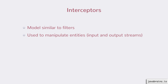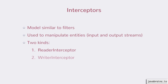There are two kinds of interceptors: the reader interceptor and the writer interceptor. This is similar to filters — you have one to read and one to write. But what's different is what's being read from and what's being written to. In the case of filters, it's the request and response information. In the case of interceptors, it's the request body and the response body.